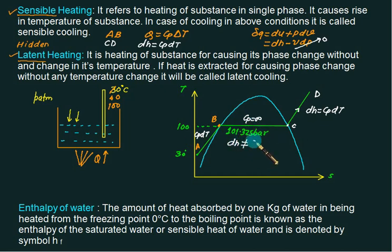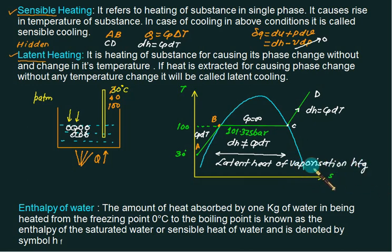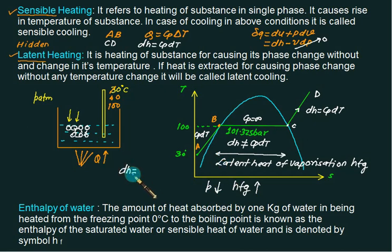In the latent heat region B to C, cp cannot be defined because the temperature is not recorded during phase change. Therefore dh = cp·dT is not valid. The energy is used to break bonds, which is why the thermometer temperature does not change. This measured value is called hfg, the latent heat of vaporization. The formula dh = cp·dT can only be used for sensible heat, not for latent heat.